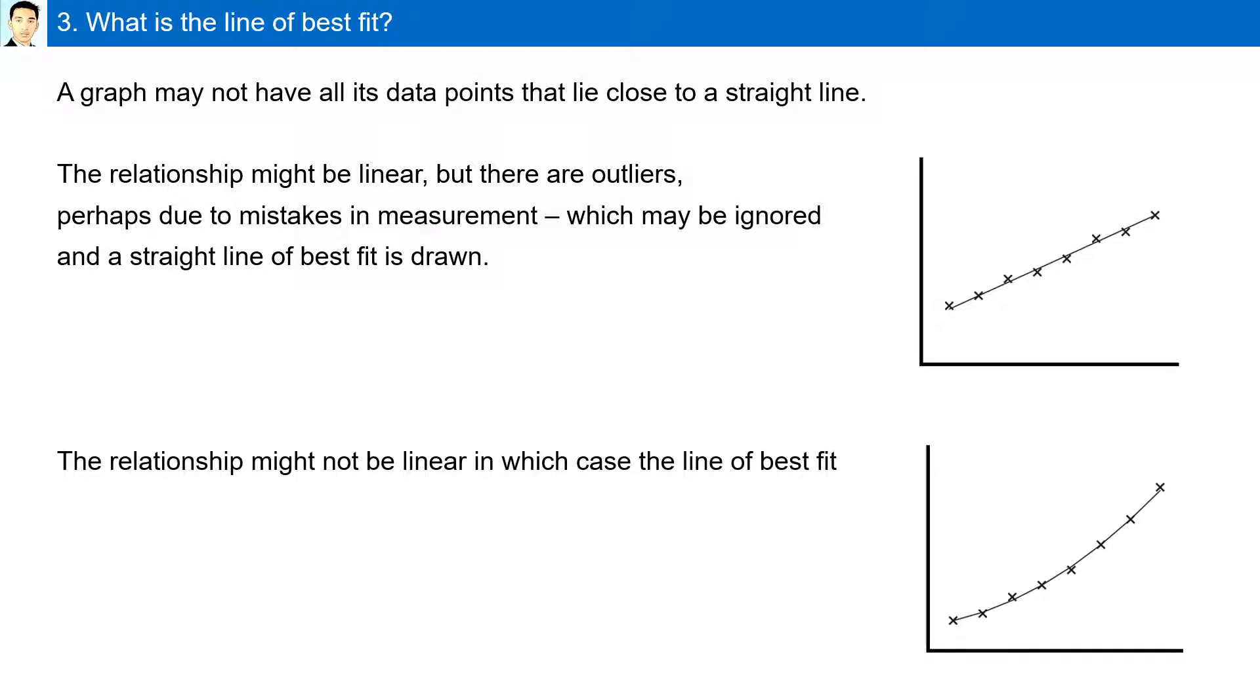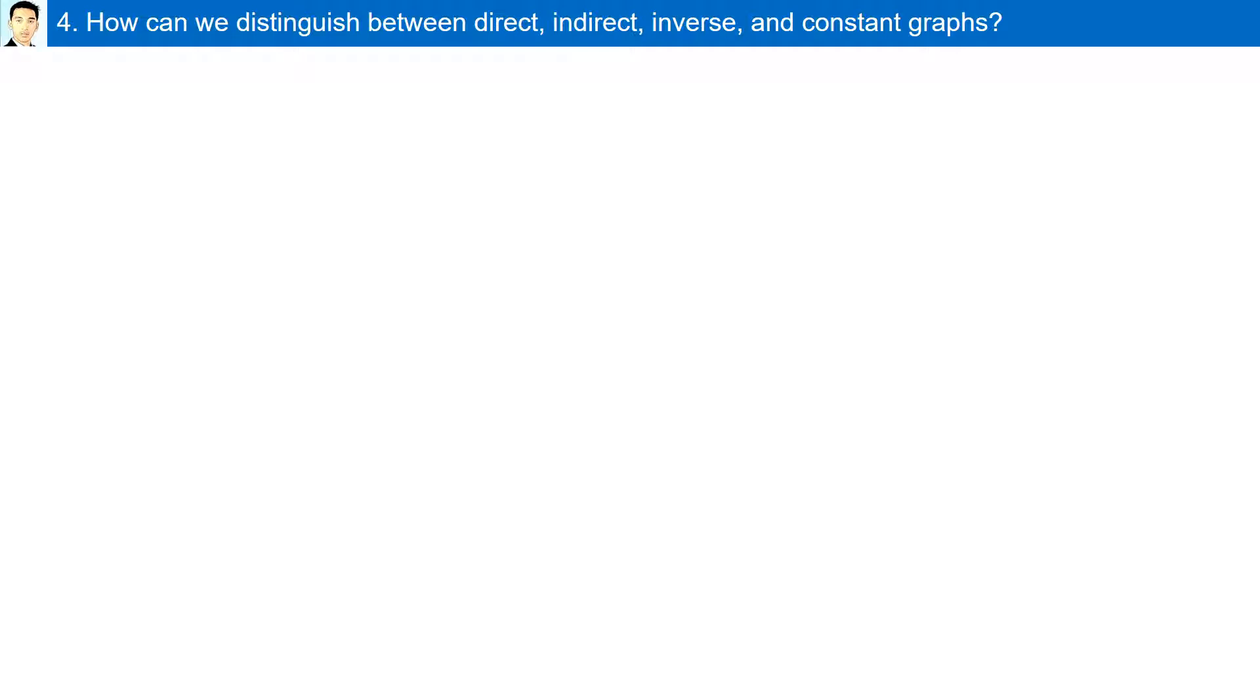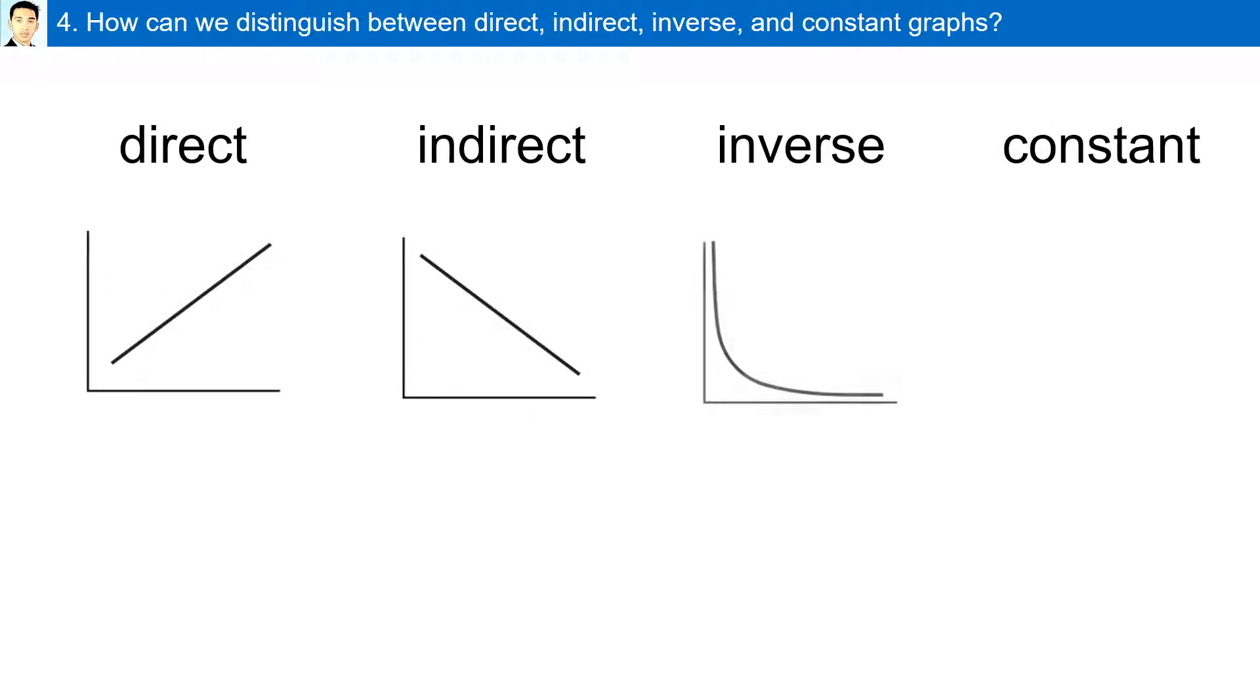The relationship might not be linear, in which case the line of best fit is a curve. How can we distinguish between direct, indirect, inverse, and constant graphs? These curves show how we can distinguish between them.